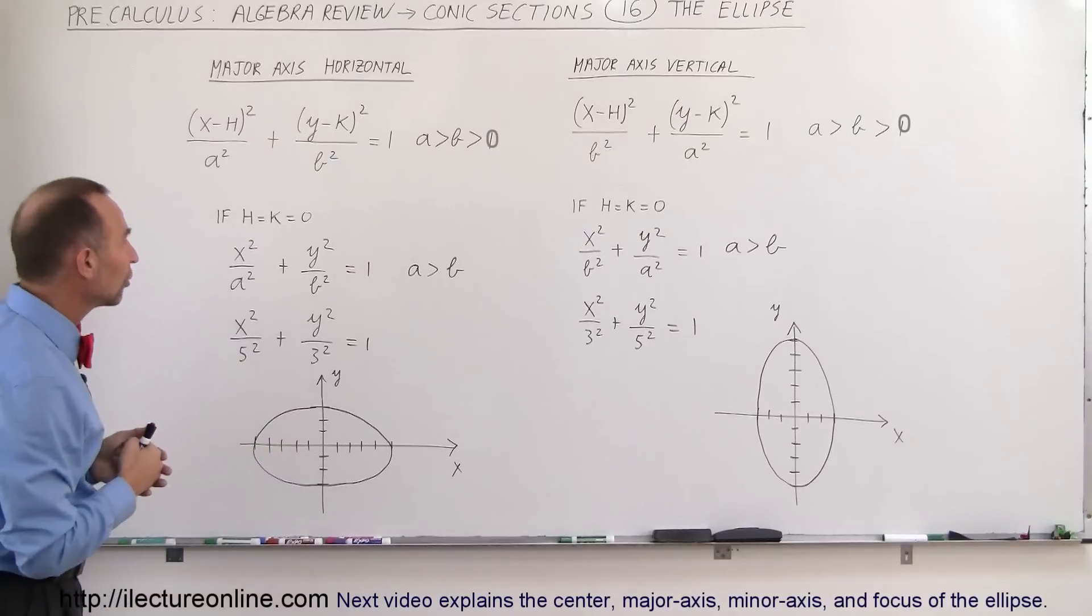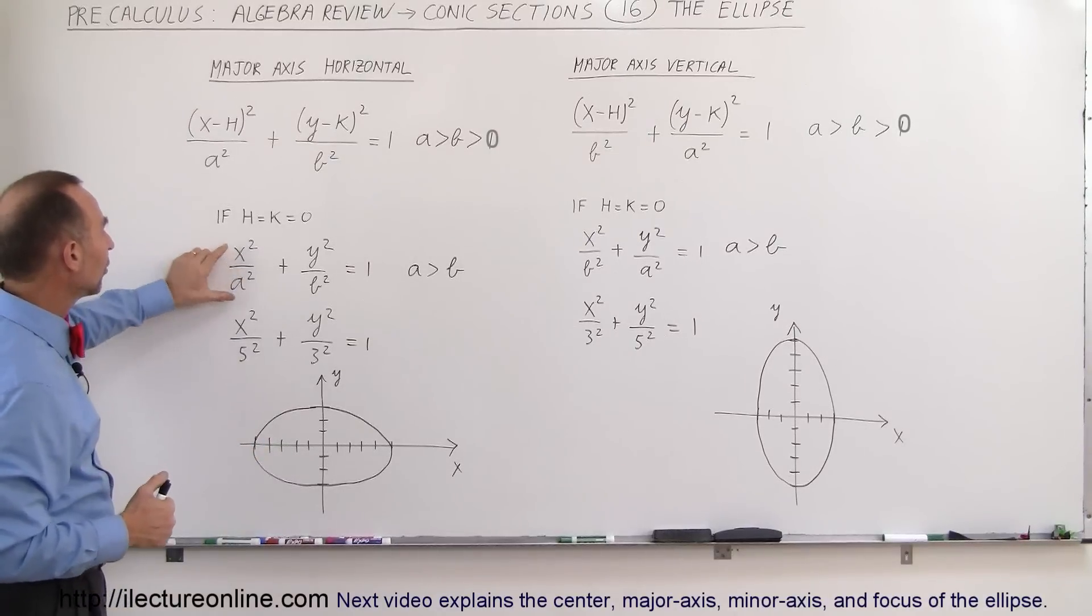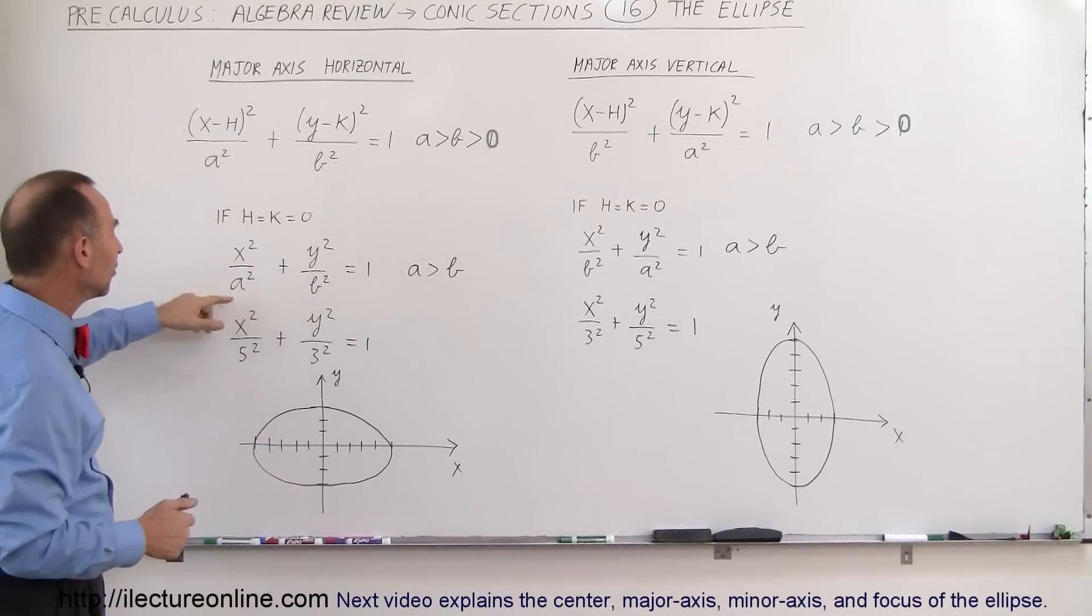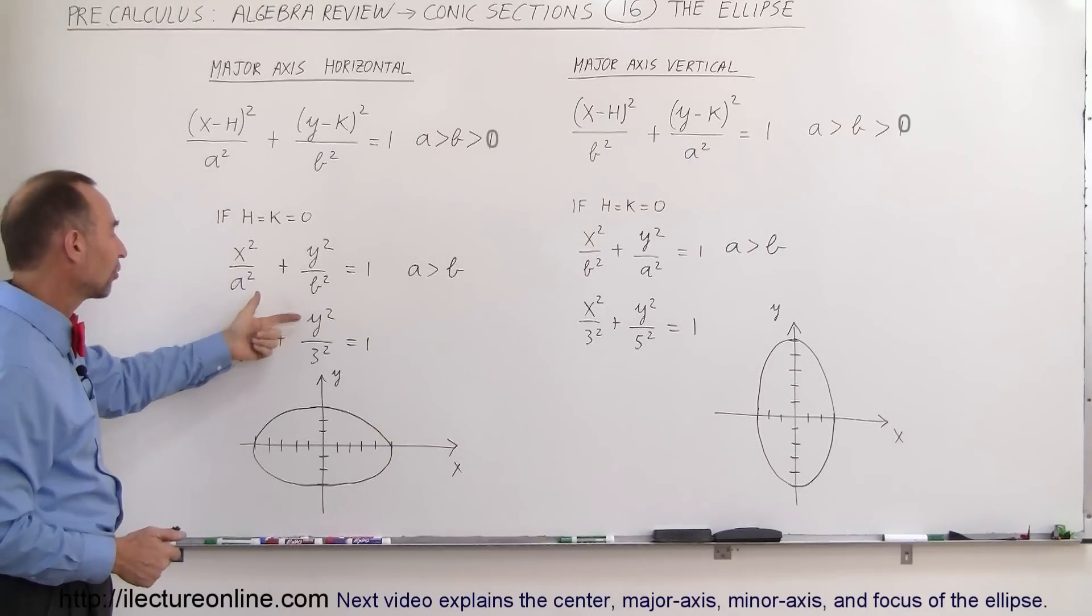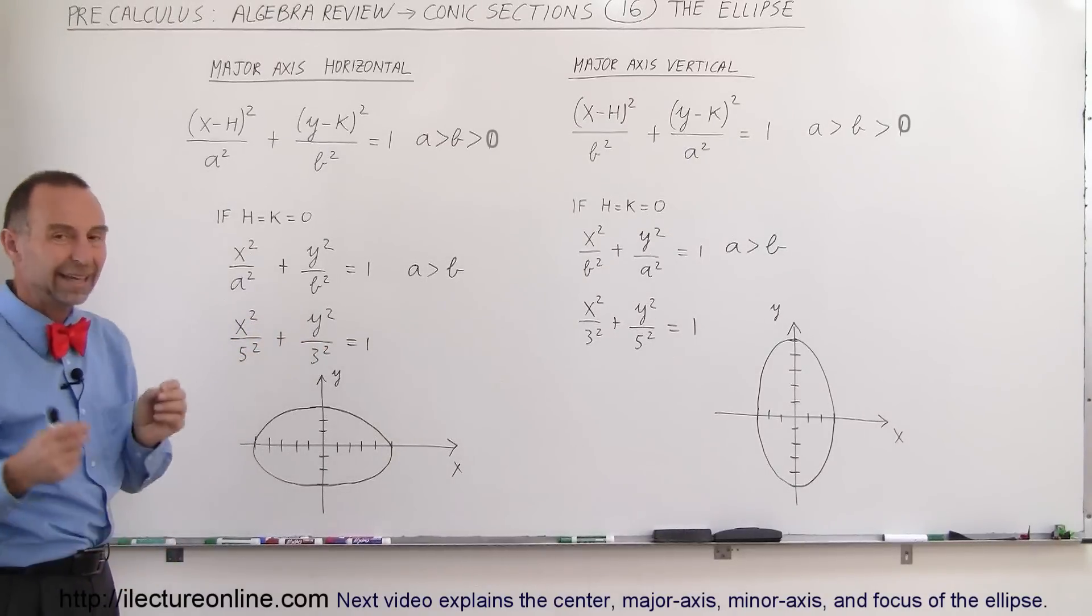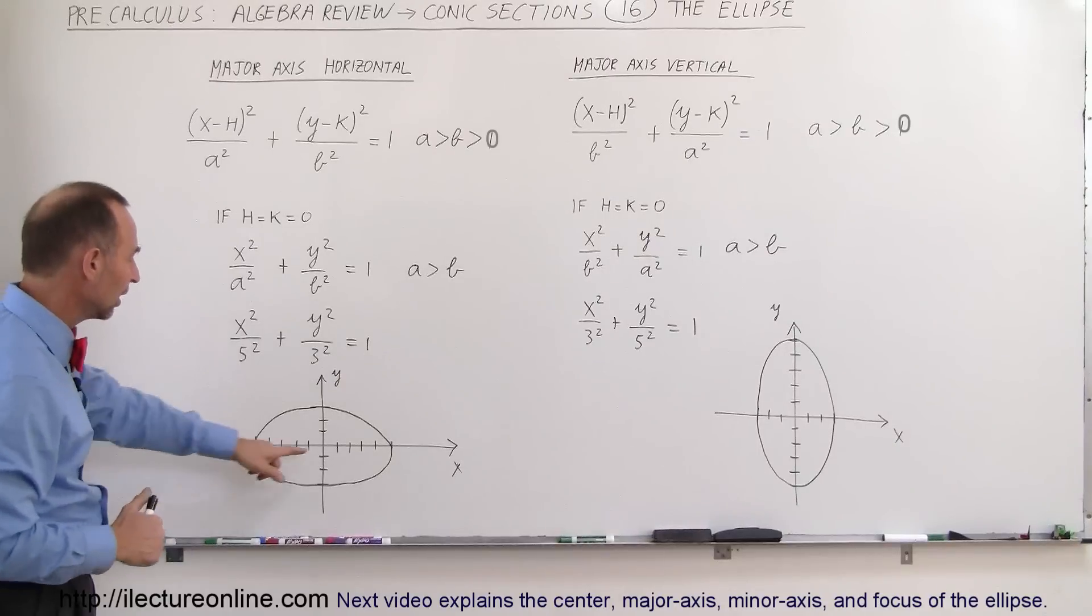Now, for simplicity, I wanted to show you an example. If h and k go to 0, then the equation is simplified like this. Here's a simple example. x²/5² + y²/3² = 1. Again, that places the ellipse at the origin. Here's an example.